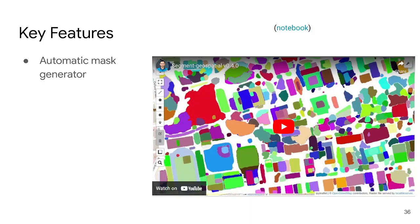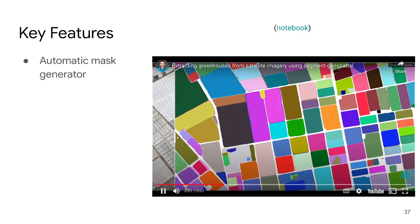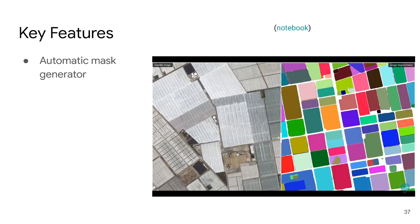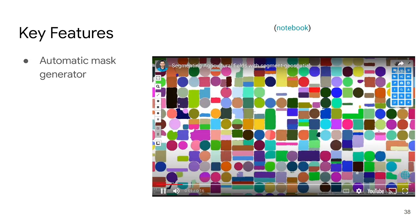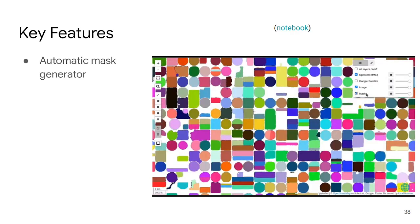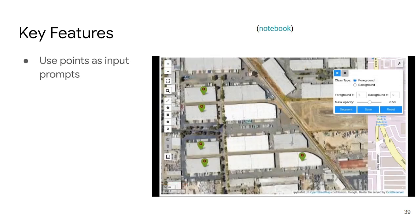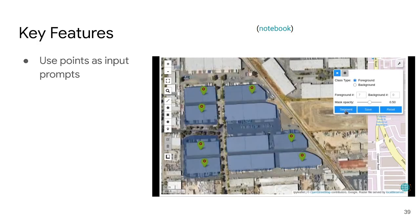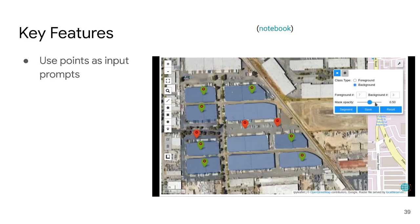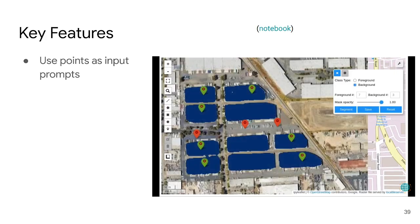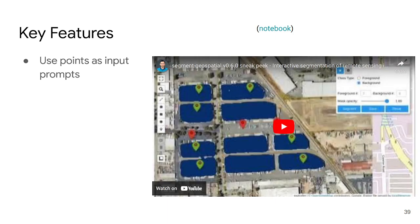This is groundbreaking because in the past, doing remote sensing segmentation required collecting training samples, going out to get labeled data, and then running the segmentation. Now you can just give it any image and it will segment and return results. For example, you can extract buildings or greenhouses with just a couple lines of code, or extract field boundaries for agriculture. You can also use points as input prompts — place a couple of markers on the buildings you want to extract, and you can also place background points to remove unwanted features.